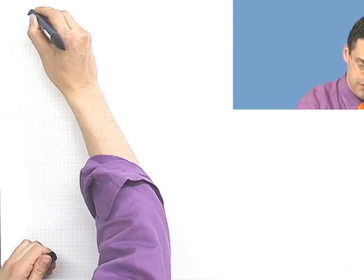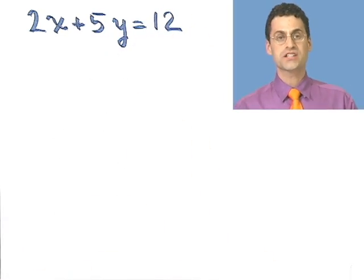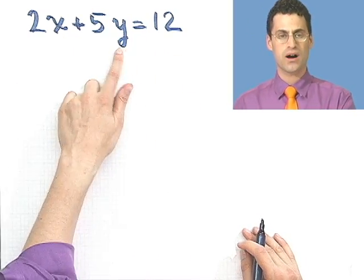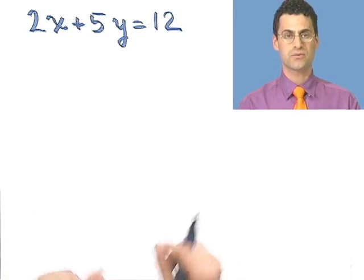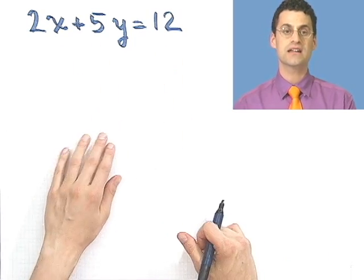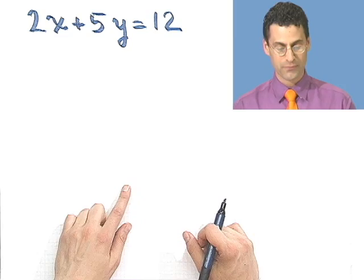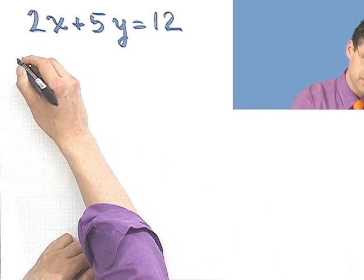Let me show you this in practice with some specific examples. Let's graph 2x plus 5y equals 12 by finding the x-intercepts and y-intercepts. If you look at this, I see x and y both appearing to the first power, so this is going to be some kind of line. In fact, this is a line in standard form — where you have something·x plus something·y equals a number. So how would we graph this? I'm going to find the x-intercepts and y-intercepts.